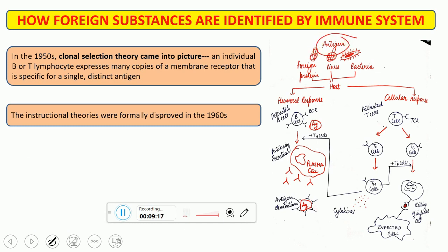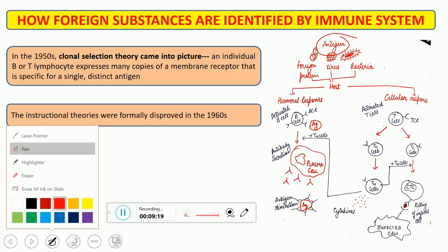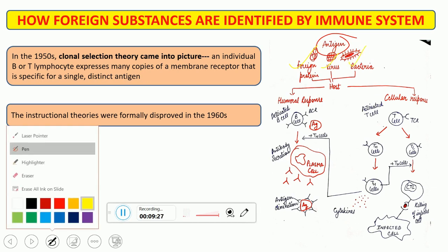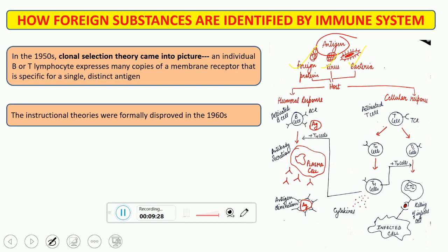Suppose this is an antigen — we have various categories of antigen. An antigen can be a foreign protein, a virus, or a bacteria. Once it enters the host, two responses or two branches of the immune system get activated: one is the humoral response and another is the cell-mediated response.